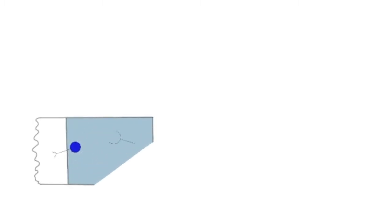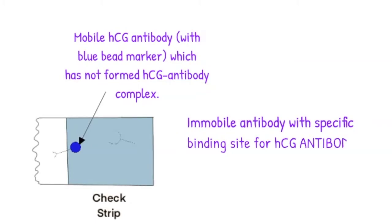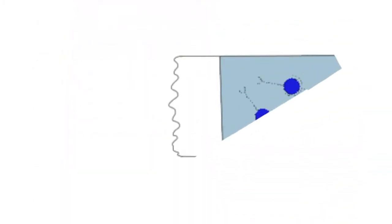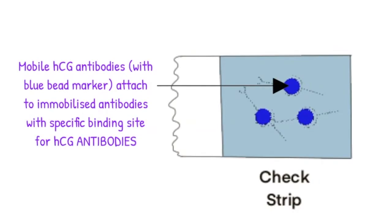To make sure the test is working properly and that the mobile antibodies are being carried up the strip by urine, there is a final check strip. As the urine continues to move along the strip, it is only carrying the mobile antibodies that did not bind to HCG molecules. In the check strip, there are immobilized antibodies specific for the HCG antibody. When the mobile HCG antibodies reach the check strip, they bind to these immobilized antibodies, giving that strip a blue color also. This shows that the pregnancy test is actually working and therefore reduces false negatives.